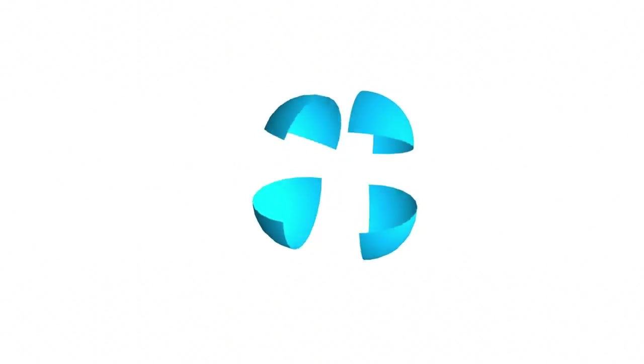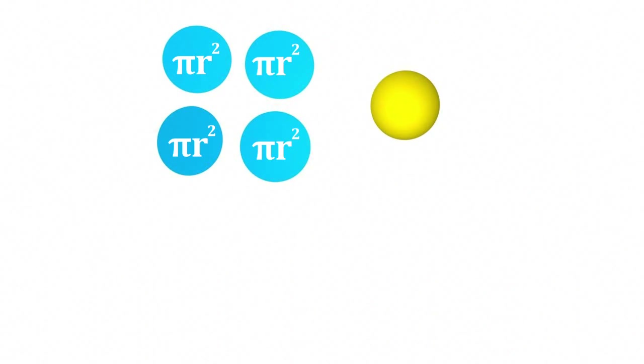The surface area of a sphere is equal to the area of four circles which have an equal radius to that sphere. So the area of a circle being pi r squared, the surface area of a sphere is 4 pi r squared.